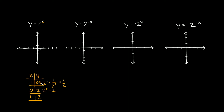So our points are: negative one comma 0.5, zero comma one — and as I mentioned, we're always going to run through the point (0, 1) — and one comma two. Connecting the dots, our graph comes down close to the x-axis on the left but never actually touches it. That's why we have an asymptote at y is equal to zero, and that will be the case for all four graphs.